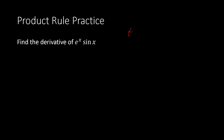I'll write this in the corner: f'g + fg'. In this first example, f is e^x and g is sine of x. Make sure you know all your derivatives for this video because I won't be reviewing them. So the derivative of e^x is e^x, giving us e^x times g, which is sine of x. Then g' is cosine of x and f is e^x.